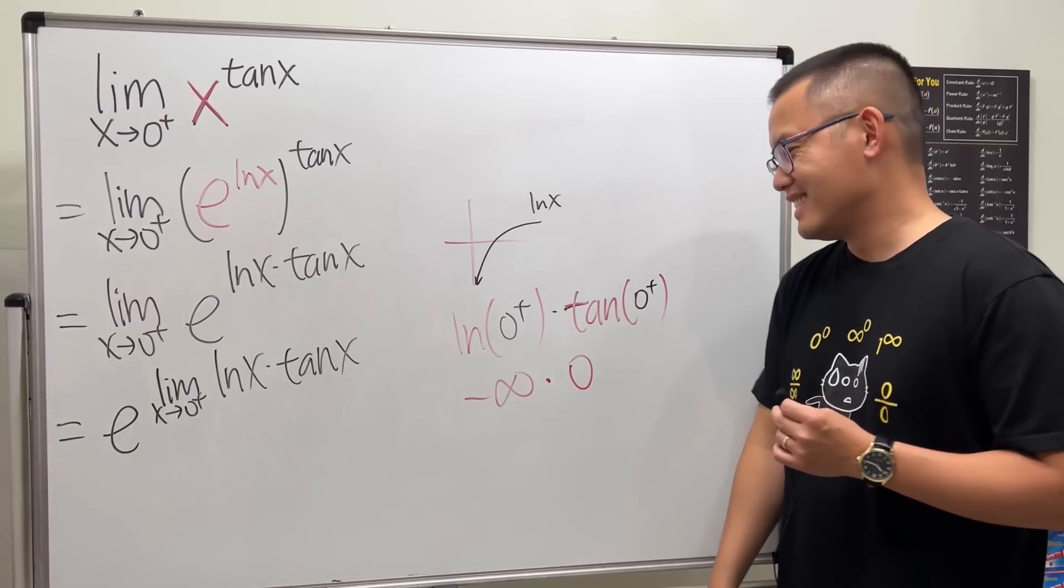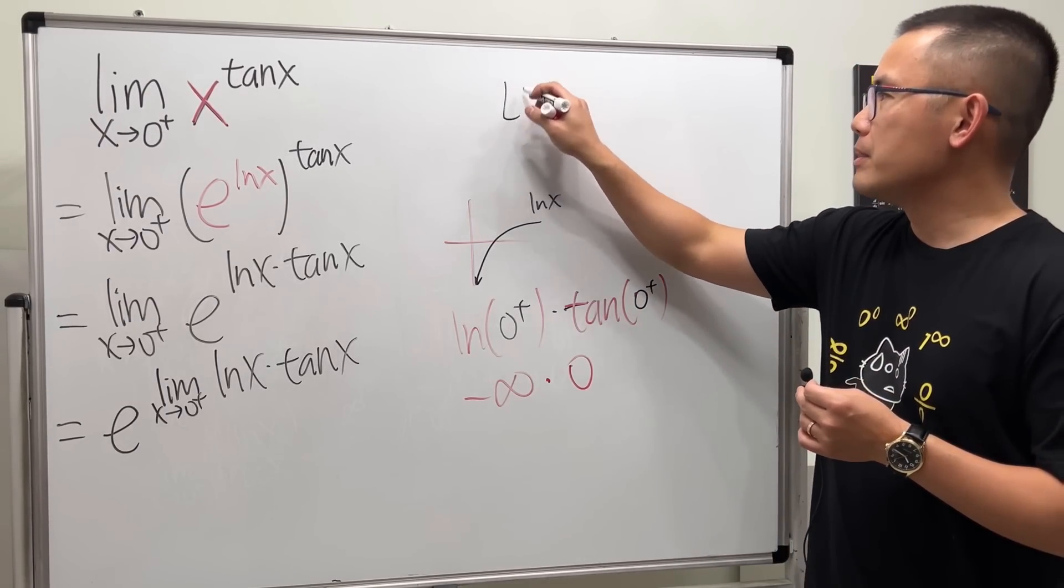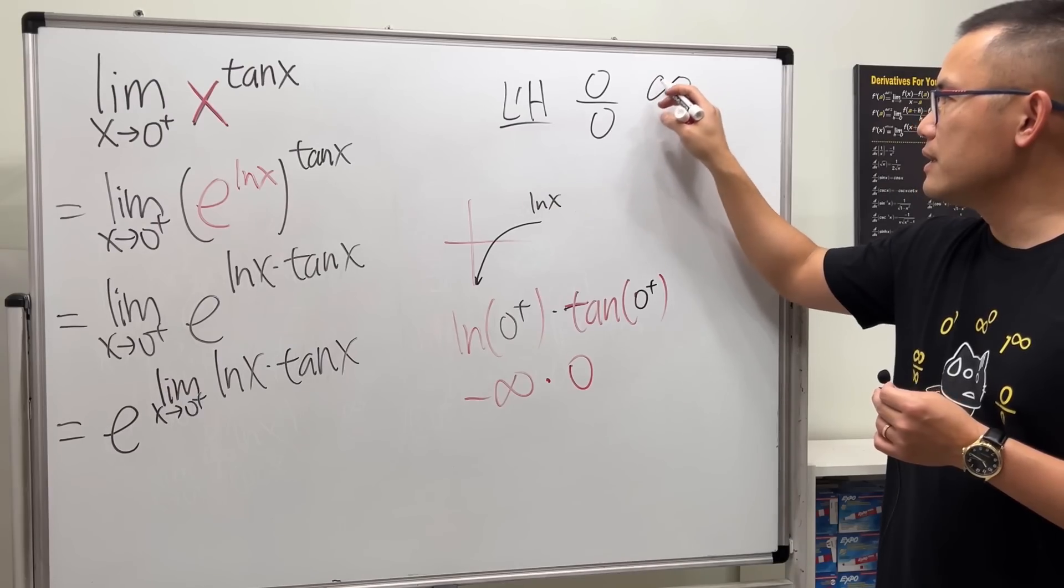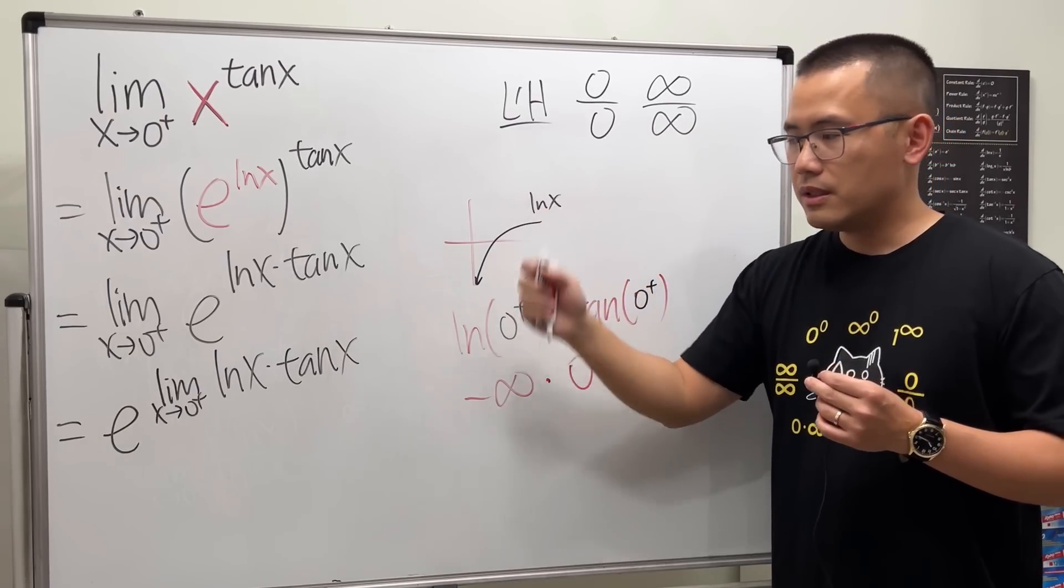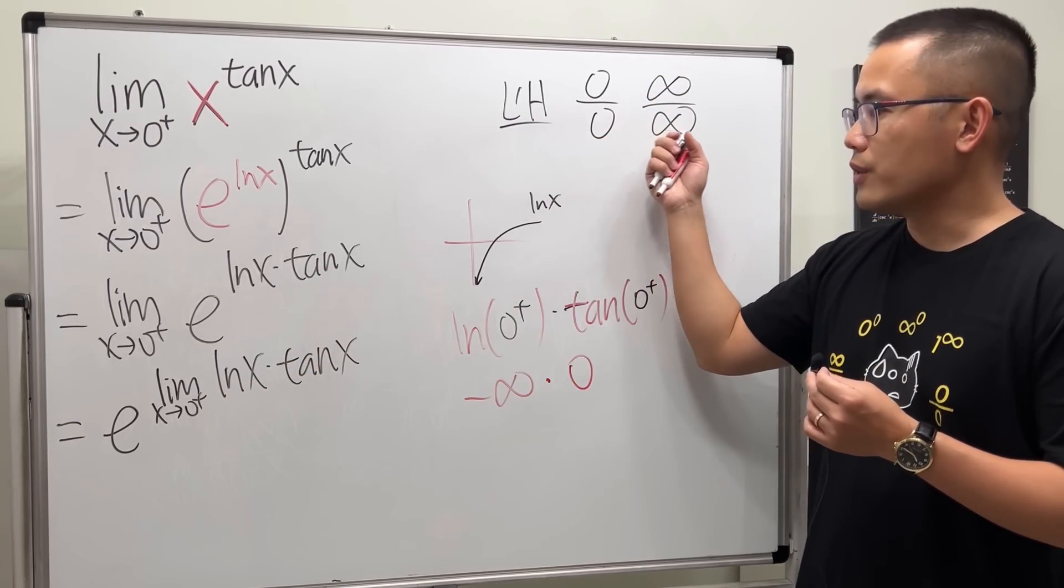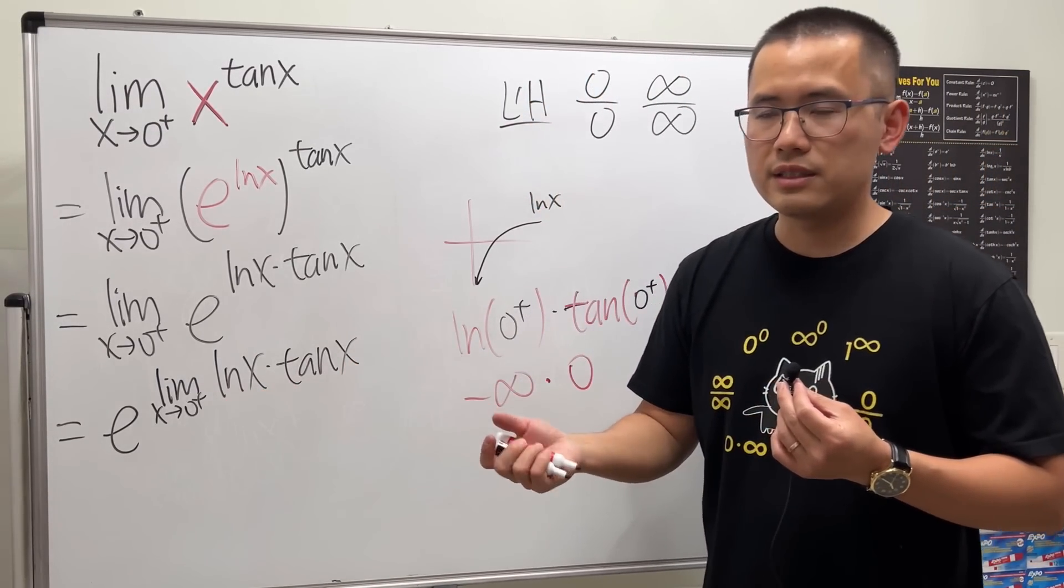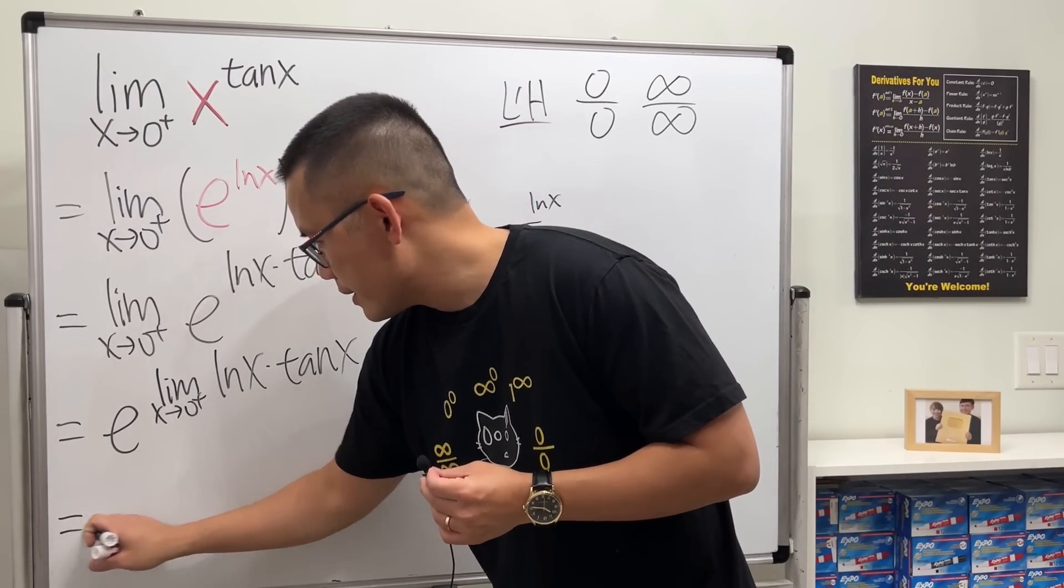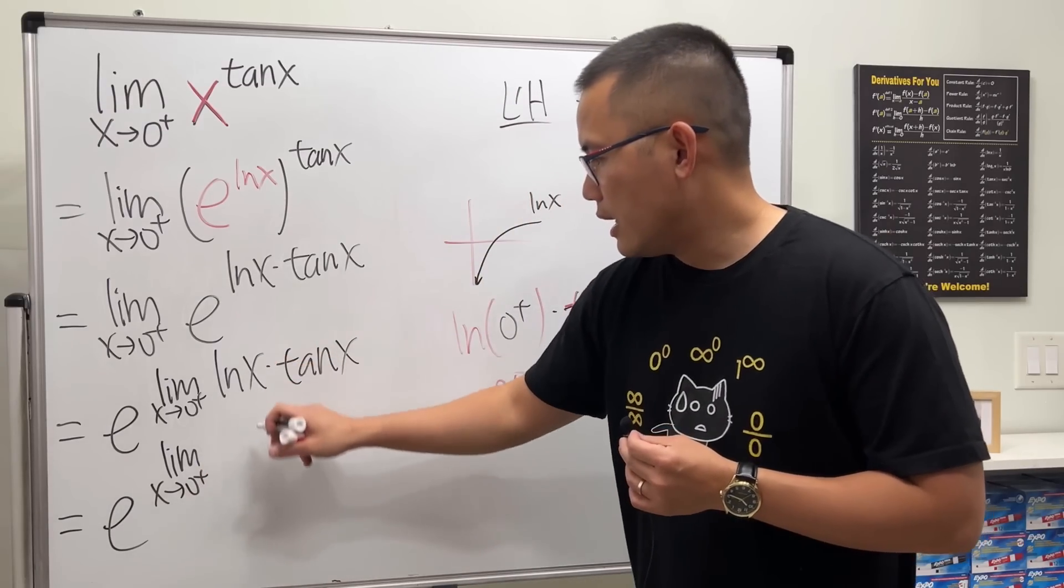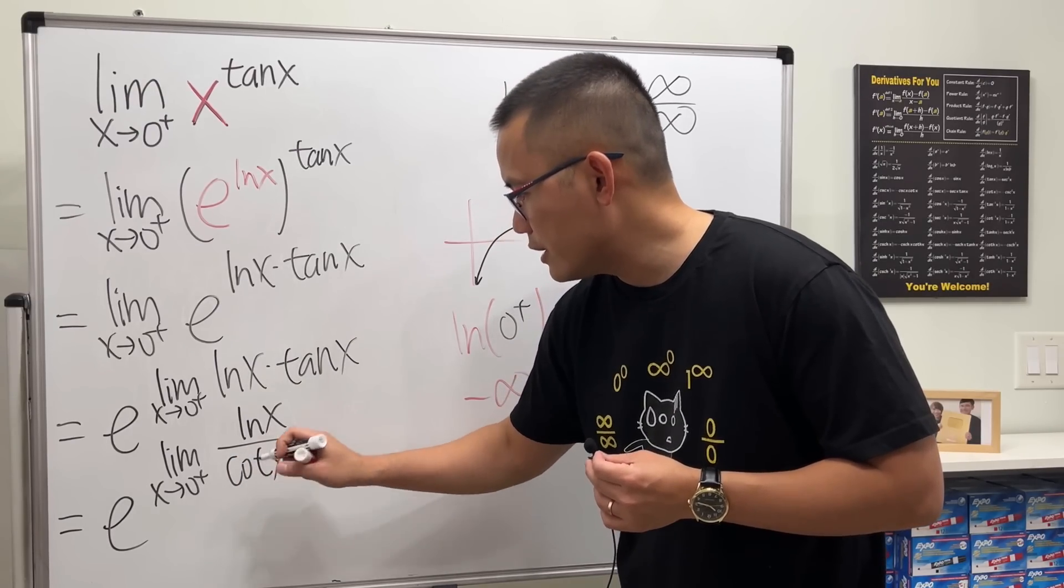So what do we do? L'Hôpital's rule. But how? Remember, for L'Hôpital's rule, we must have either zero over zero or infinity over infinity, one of these. So we have to somehow turn one of them to the denominator so that we get either one of these. I'm going to bring the tangent x down to the bottom and make that cotangent x. So let's see. E, now limit x approaching zero plus, I will keep the natural log of x on the top, bring this down to the bottom, becomes cotangent x.